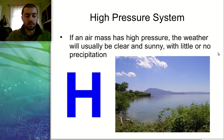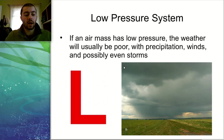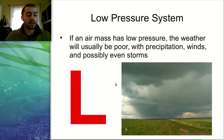As for the pressure systems, a high pressure system is going to have a big H on the map, and a low pressure system will have a big L on the map. You can look for these things on weather maps on the Weather Channel or in the paper, and try to identify based on the symbols what type of weather is coming in.